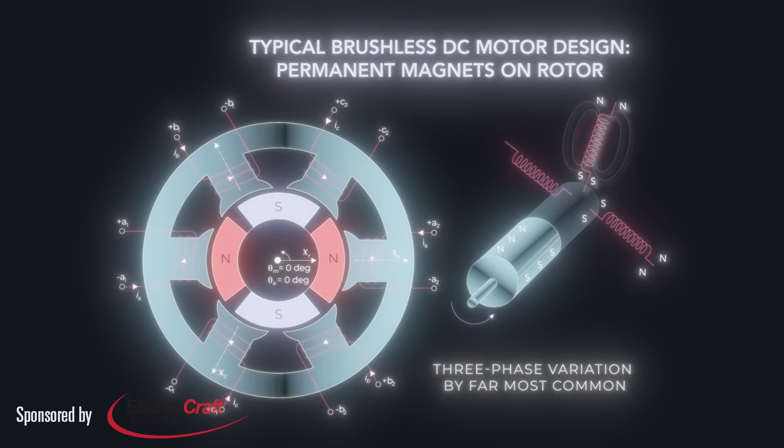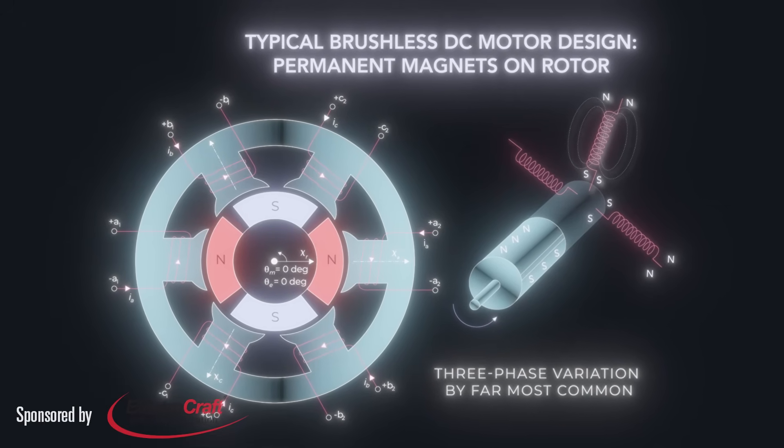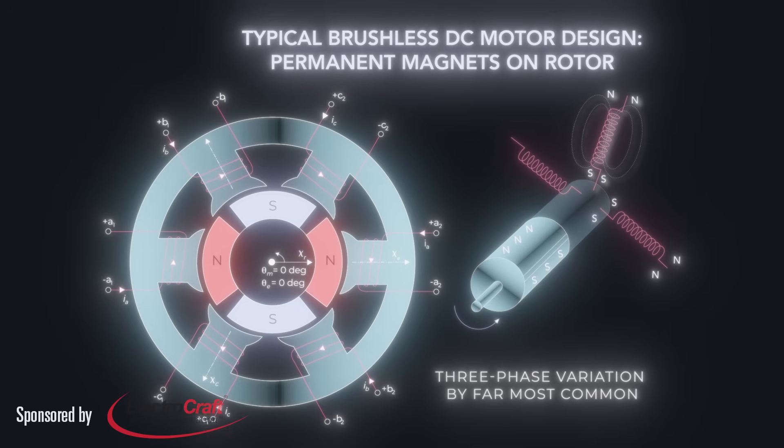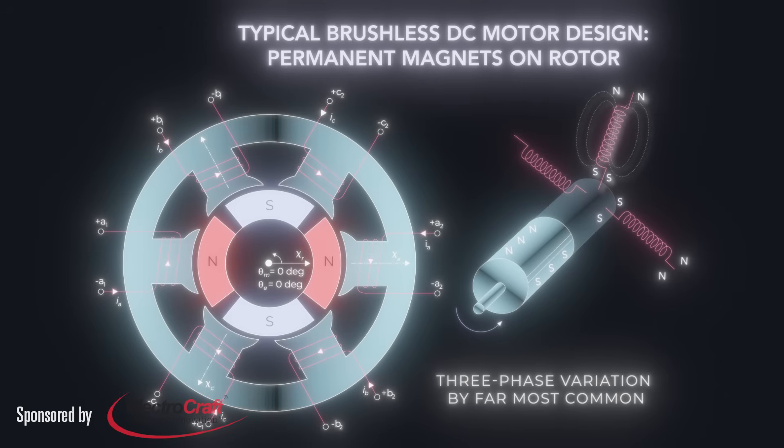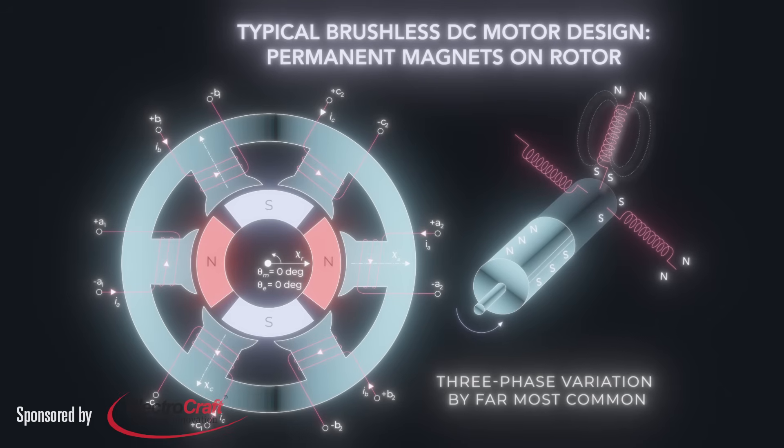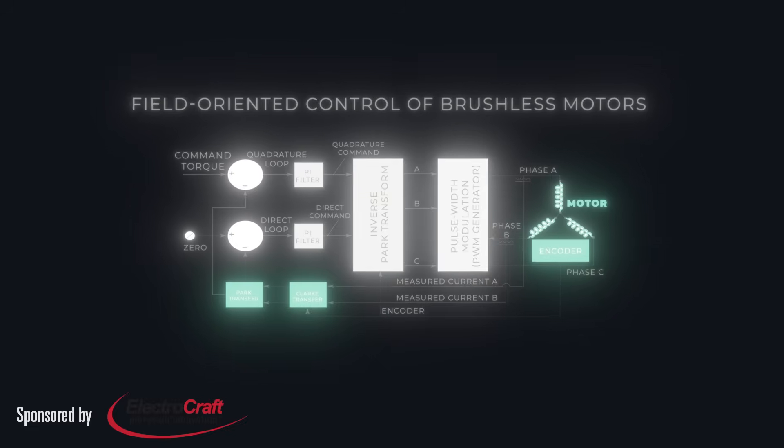One simple way to control brushless motors is with trapezoidal commutation. Here, current is metered through the motor's phases two at a time with the third unpowered. Hall sensors track rotor position and enable the switching between phases in the correct sequence. The main limitation is that the phase current vectors can only have six discrete directions.